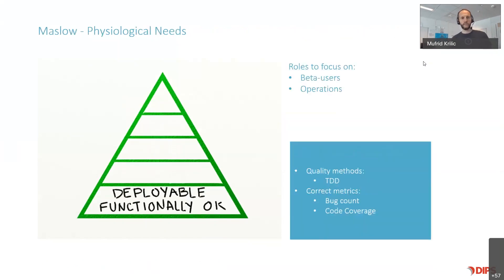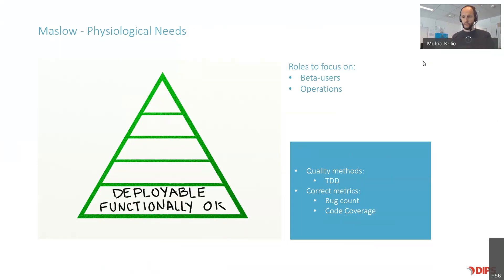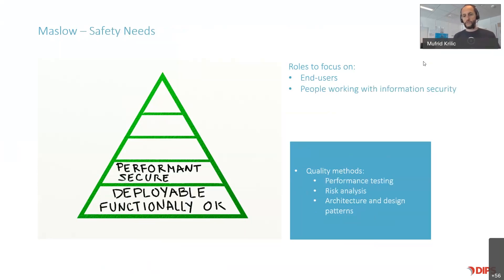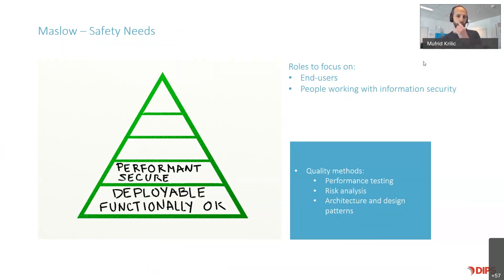As in Maslow, there is the bottom layer. He called it physiological needs. Goiko defined it as deployable and functional software. At this level, you work on the quality methods that form the backbone of quality, like test-driven development. You try to reduce bugs and increase code coverage. You work with some users that give you early feedback on your design, and you need to cooperate with the IT operations department at your customers to ensure the software is deployable. Given that the software works as specified and is deployable, you are concerned with performance and security. You do risk analysis and performance testing, and according to Goiko, it's here that investment in architecture and design starts to pay off.